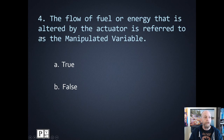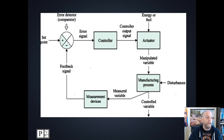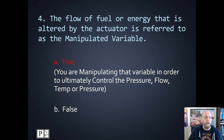Number four: the flow of fuel or energy altered by the actuator is referred to as the manipulated variable. The actuator — a valve, a motor, or a heater — is manipulating something. The actuator is right here and the manipulated variable is right here, ultimately controlling temperature, pressure, level, or flow. The answer for that is true. You're manipulating that variable in order to ultimately control pressure, flow, temperature, or level.